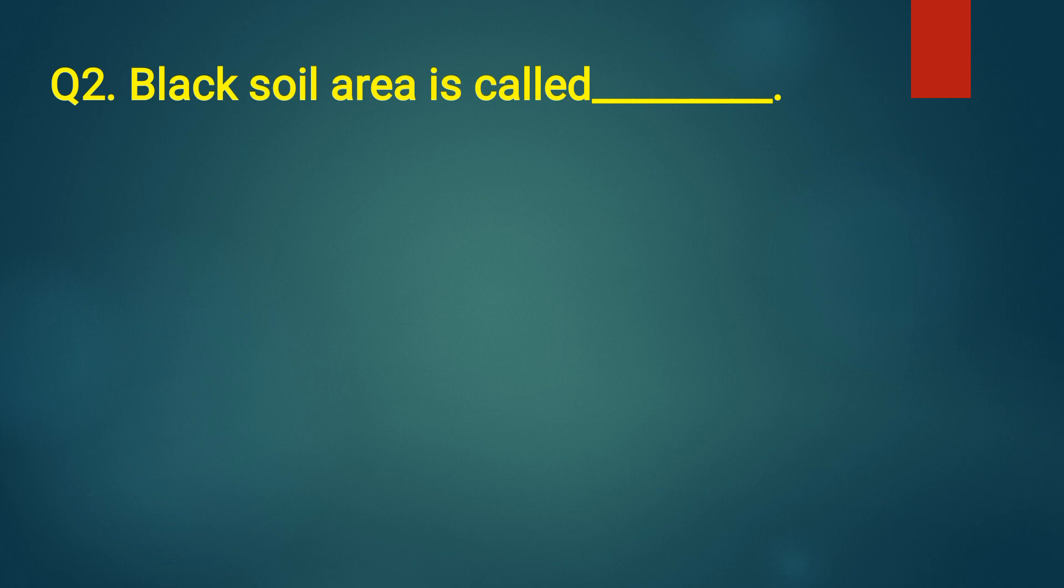Second question, black soil area is called dash. Answer, Deccan trap. Black soil area is called Deccan trap.